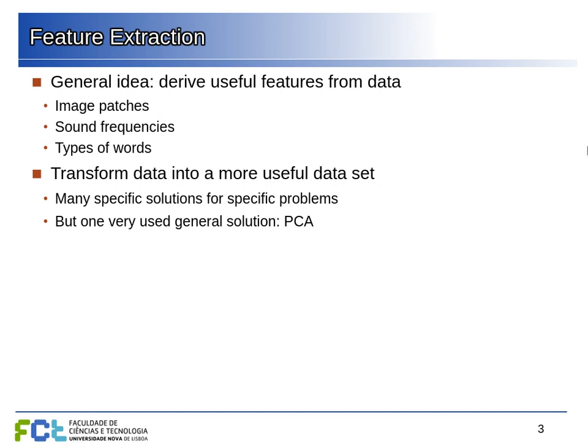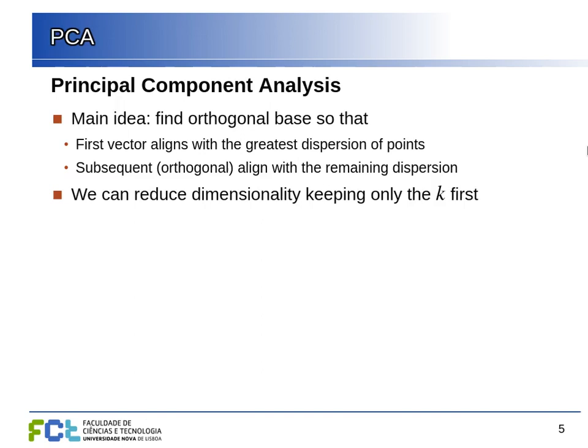This is one problem in feature extraction which is very dependent on the actual data you're working with, so we're not going to look at that in detail. We're going to look at one very commonly used transformation in which you take a higher-dimensional space and compress it into a lower-dimensional space by retaining as much variance as possible — this is principal component analysis.